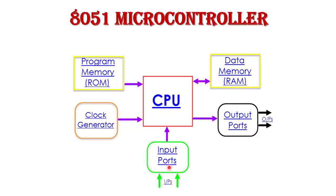Now, how is a microcontroller different from a microprocessor? A microprocessor only has a CPU — central processing unit — which consists of registers, a control unit, and an ALU. All other components such as memory, input/output ports, and clock generator are used externally in the case of a microprocessor.